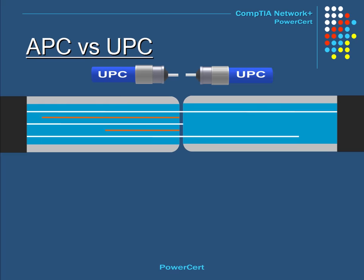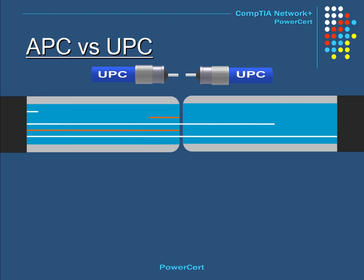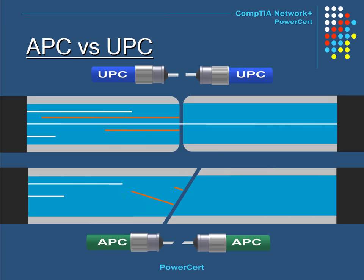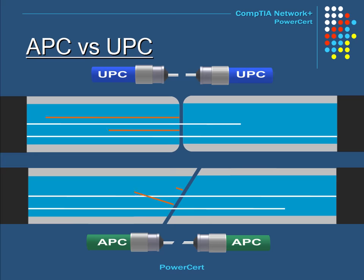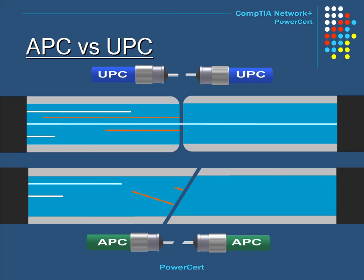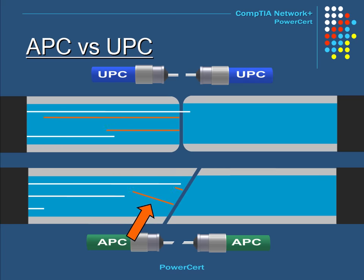As technology progressed, a new connector was developed to decrease this signal loss — this is called the APC connector. The difference between UPC and APC is the angle of the tip where the connection is made. With the UPC, light reflects back towards the light source. But with the APC, due to its angled connection, the light doesn't reflect back towards the light source — it reflects back at an angle into the wall of the cable. As a result, this greatly reduces the signal loss.